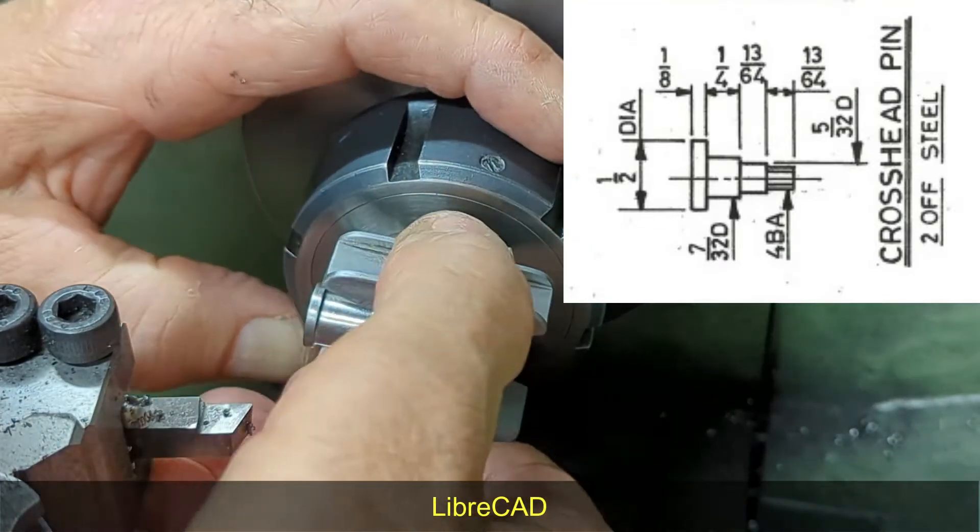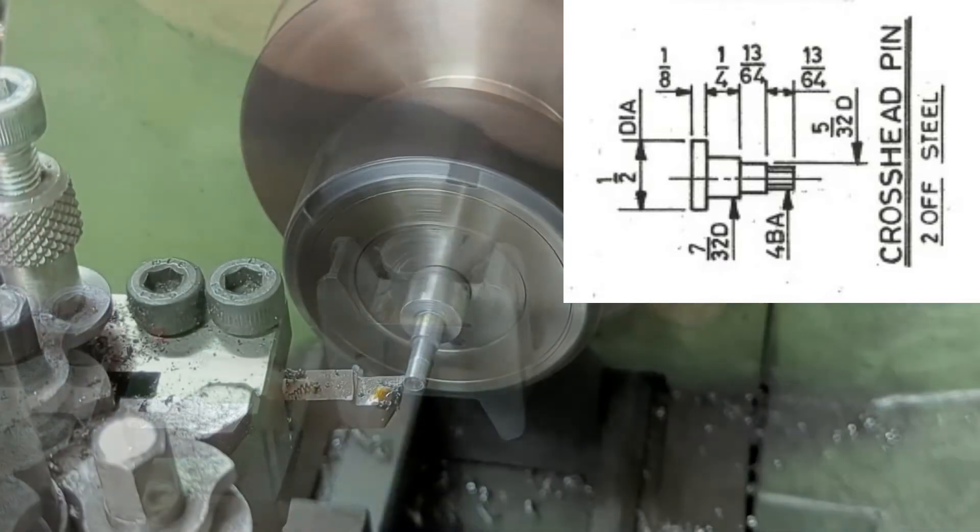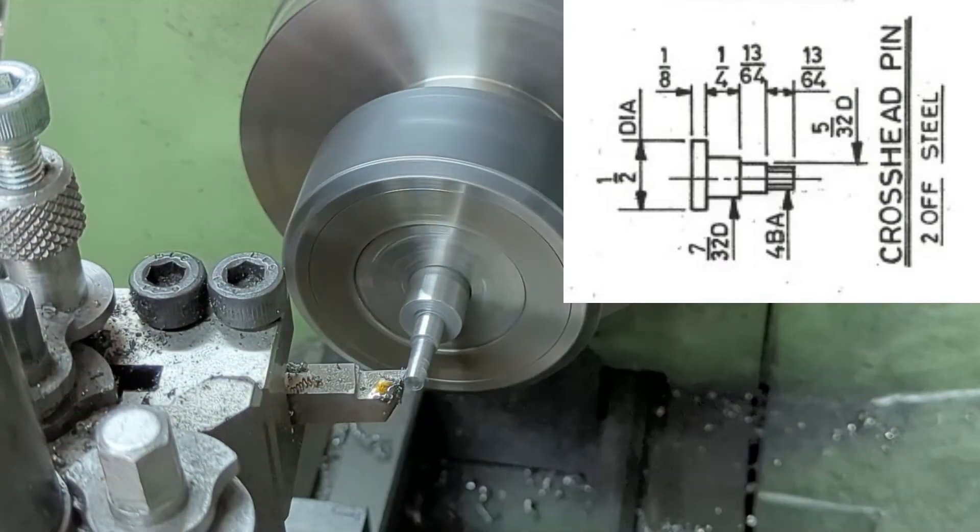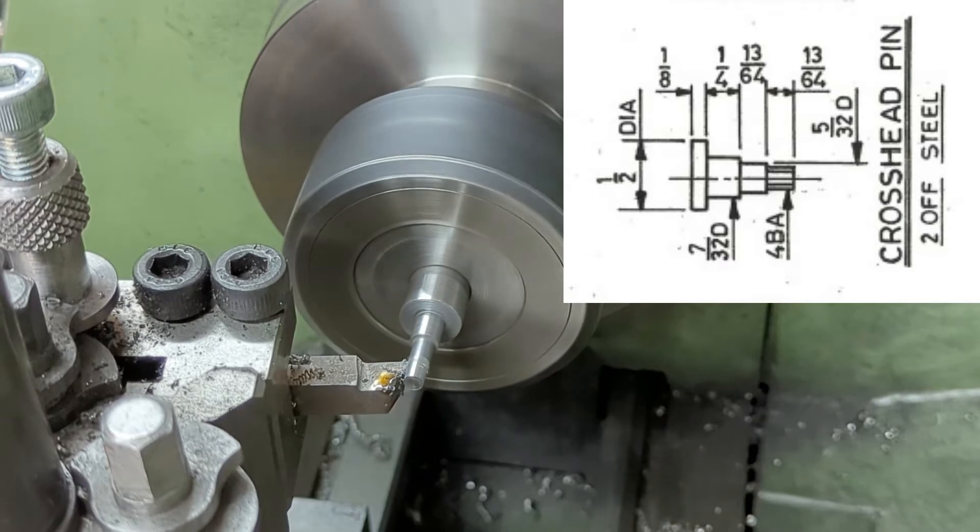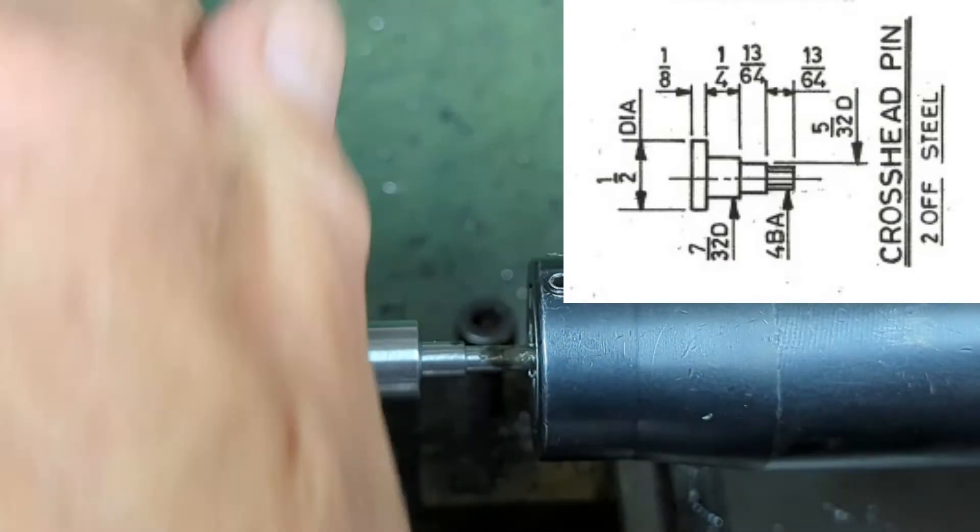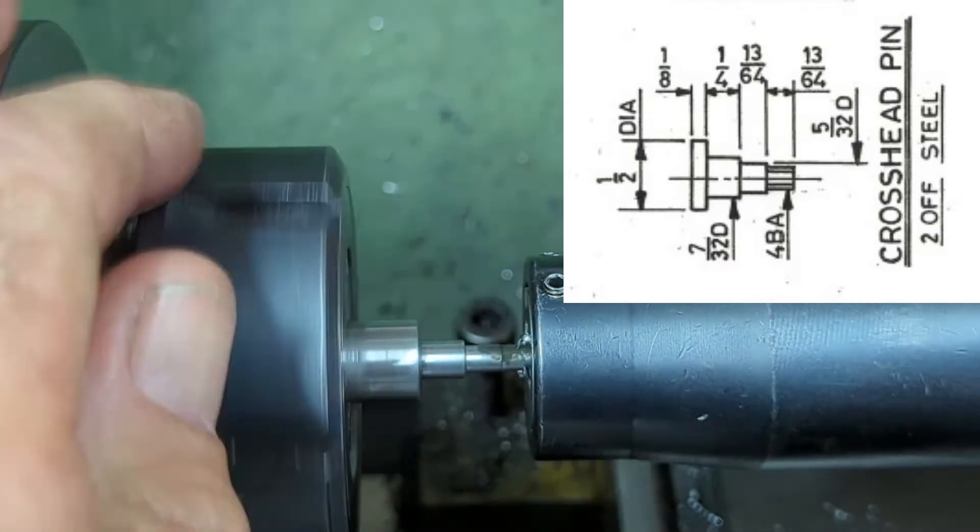However, as I progress through the build, I also need to consider the parts I've already made, as not only would I have already converted some of those dimensions from Imperial to metric, but I may have actually deviated quite a bit from the design as well.